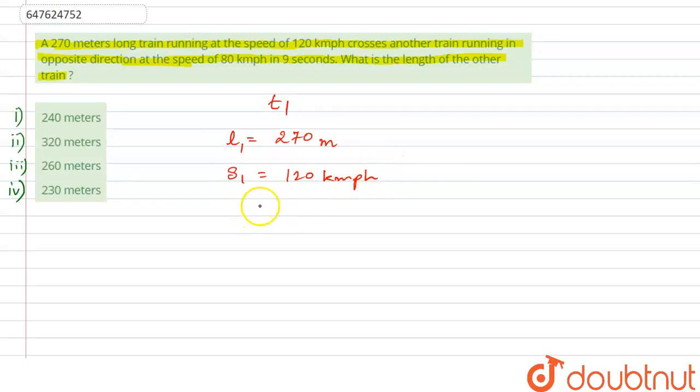So, what did he do? He crossed the other train, which was in the opposite direction, okay? So, how did this happen? Let's look at the diagram. So, this train, T1, was like this, and the other train was like this. So, the other train was like this. So, this is our train 1 and this is our train 2, okay?